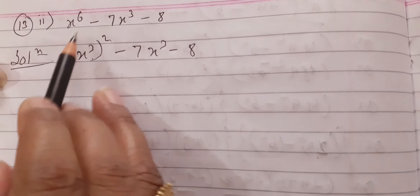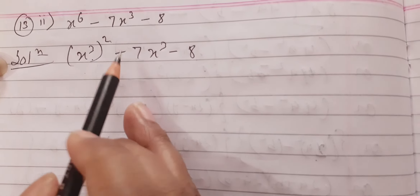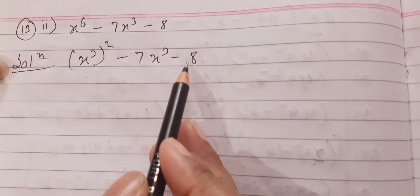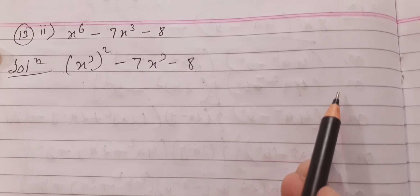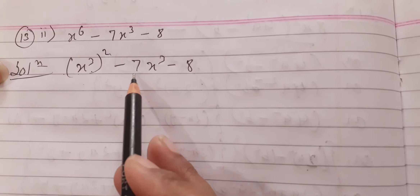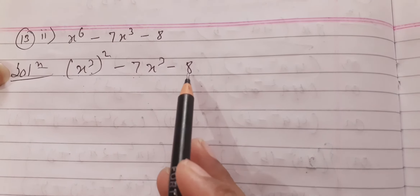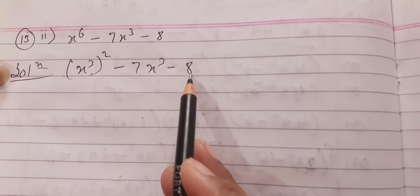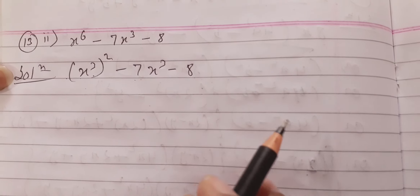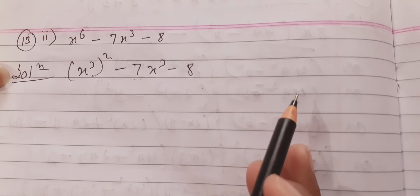You just think of this as a quadratic: first term, middle term, and last term. We need to split minus 7 into two numbers whose product is minus 8 and whose sum is minus 7. No need to convert or take x³ as another variable — you may directly start. The numbers are minus 8 and plus 1, because minus 8 plus 1 is minus 7, and minus 8 times 1 is minus 8. Both are verified.